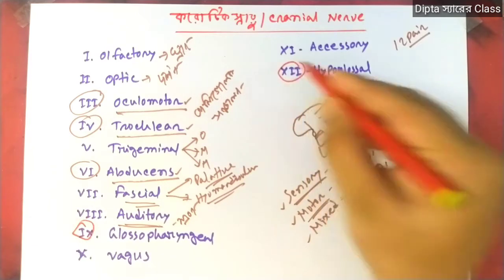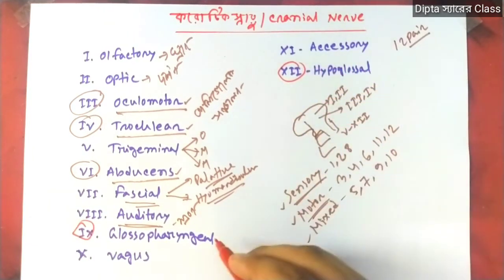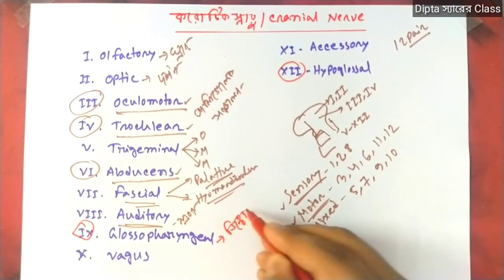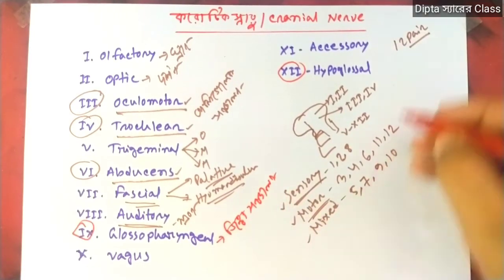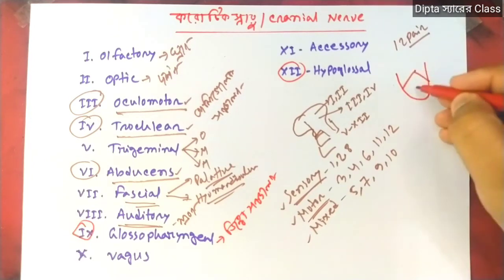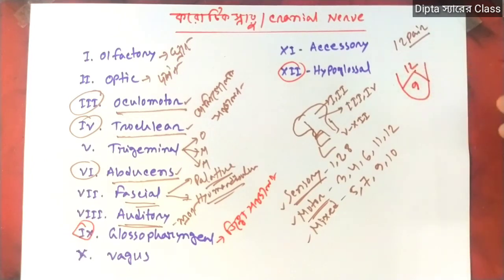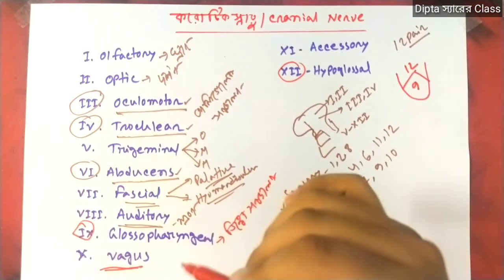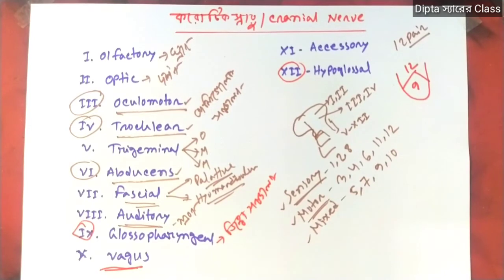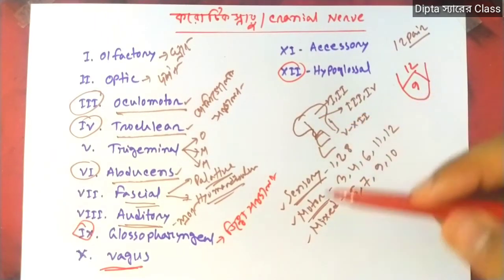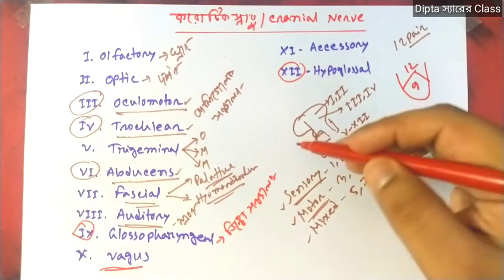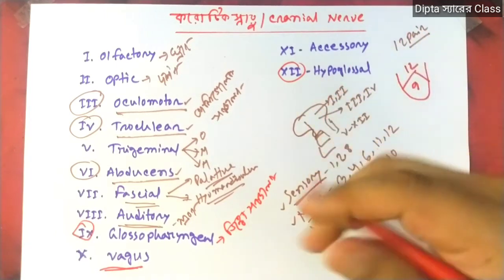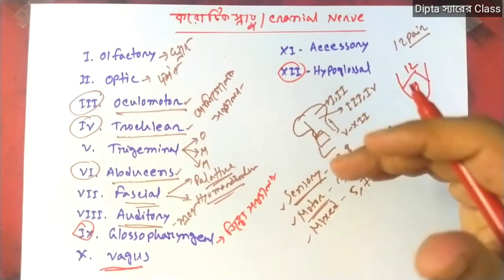The Glossopharyngeal is a mixed function nerve. The Vagus nerve supplies many structures — it has branches including the laryngeal branch, cardiac branch, and pulmonary branch, making it a very wide-ranging nerve.